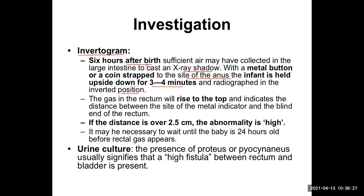If this distance is longer, it is known as a high type of anal atresia. If it is very short or right there, then treatment is also very easy and it is not a complicated situation. The gas in the rectum will rise to the top and indicate the distance between the metal indicator and the blind end of the rectum. If the distance is over 2.5 centimeters, the abnormality is called a high one — and it is a complicated one.